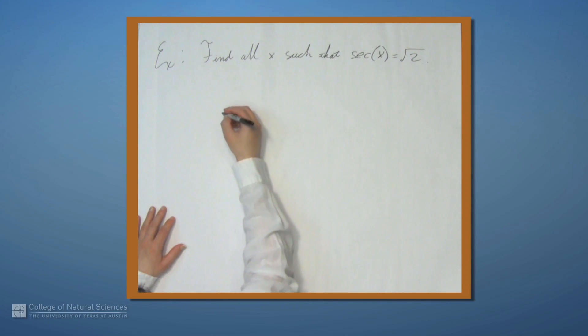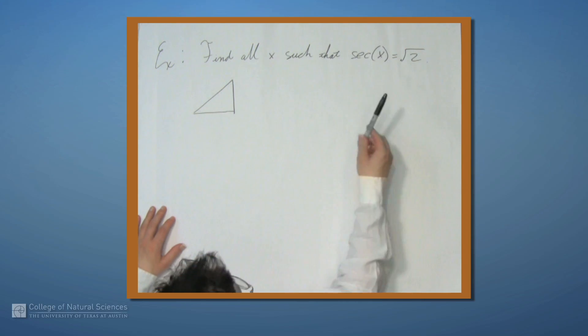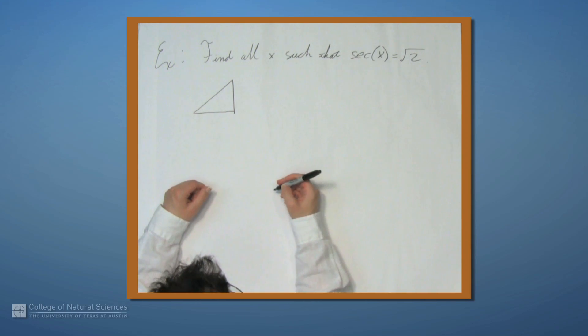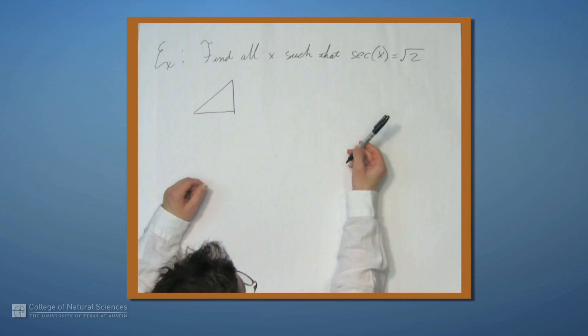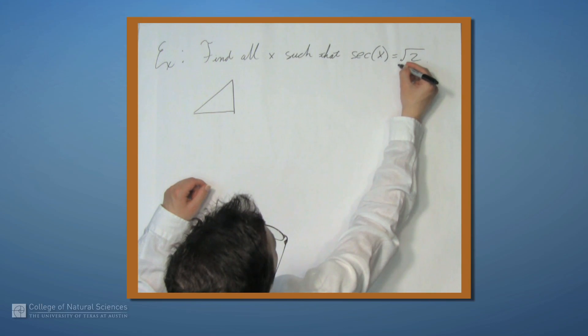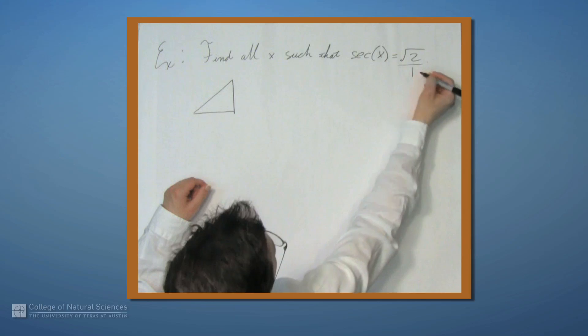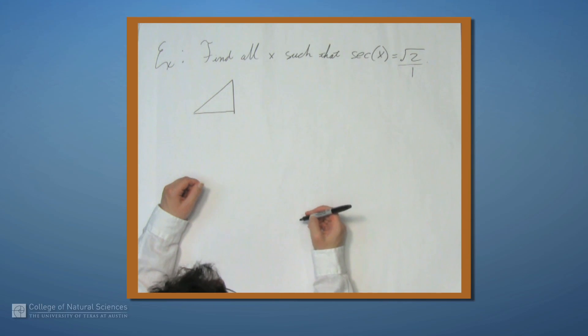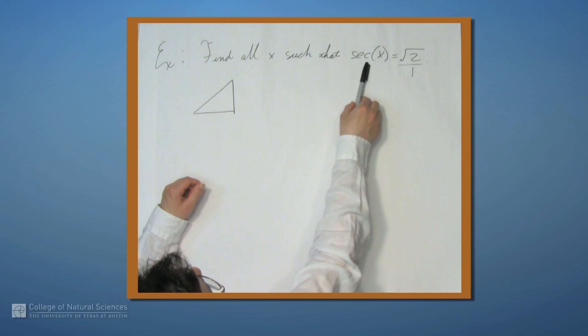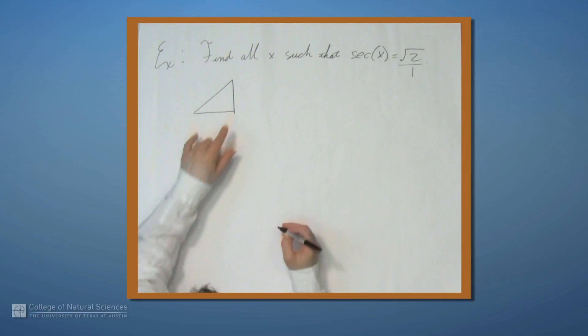So let's start in a very similar way. We'll start by drawing a triangle. And we have to make the right ratio equal to the square root of 2. Well, the square root of 2 doesn't look like a ratio, so we'll think about it as if it were square root of 2 over 1. Now, of course, it is square root of 2 over 1. We just normally don't write it that way. Now, what is secant? Secant is 1 over cosine. Cosine is adjacent.